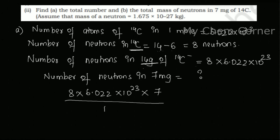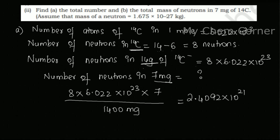Converting 14 grams to milligrams gives 14,000 milligrams. Multiplying all of this out and dividing, I get 2.4092 × 10²¹ as the number of neutrons present in 7 milligrams of Carbon-14. That is the answer to part (a): the total number of neutrons.